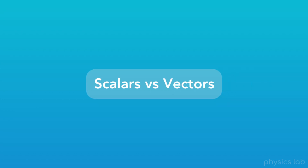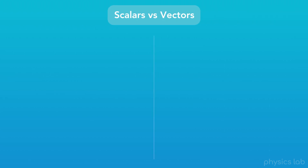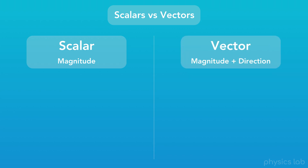Next up, let's talk about scalars and vectors. A scalar is a quantity that only tells you the magnitude, and a vector is a quantity that tells you both the magnitude and the direction.